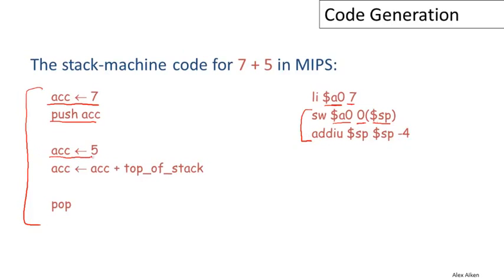Now we're ready to do the next instruction, loading five into the accumulator. Well, we already know how to do that. There'll be a load immediate into the accumulator register A0, the immediate value five.